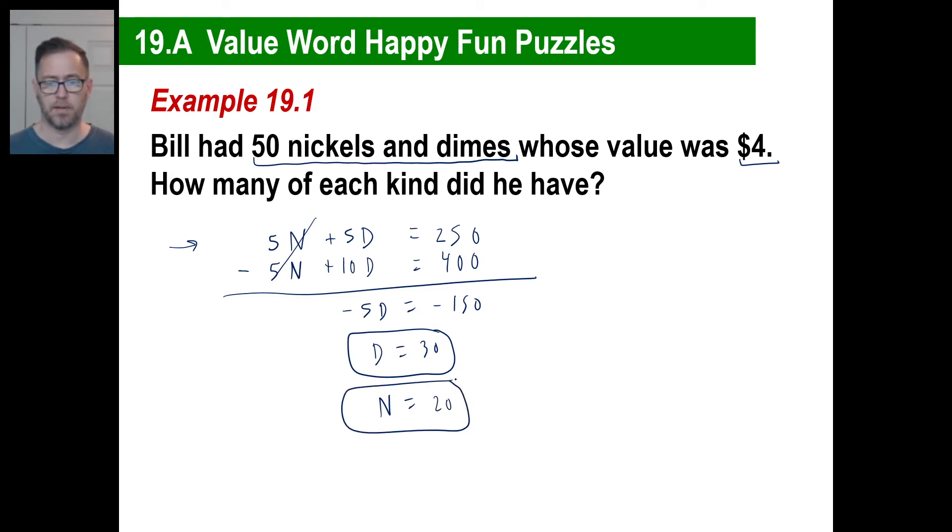There we go. Let's prove it. How much is 30 dimes worth? $3, right? So that's $3. How much are 20 nickels worth? 20 times 5 is 100 cents. That's a dollar. Add those together. There we go. We got it.